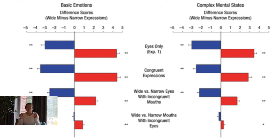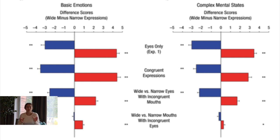Looking at the results table, the top section shows eyes-only conditions. The difference score shows how much emotion scores varied based on wide-eyed versus narrow-eyed scenarios. There was a big difference between wide-eyed and narrow-eyed situations with eyes only, and still a big difference when the mouth was added. In the incongruent situation where participants relied on the eyes, they still performed well. When incongruent and told to look at the mouth, they started to do worse.